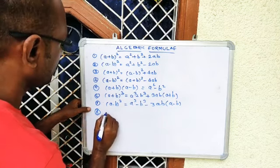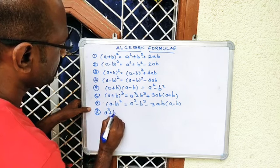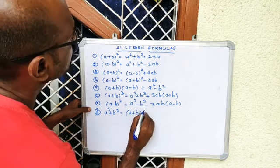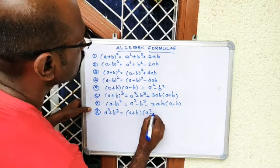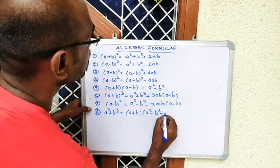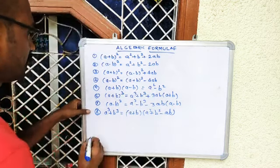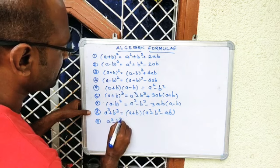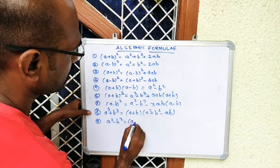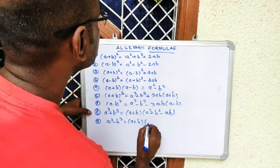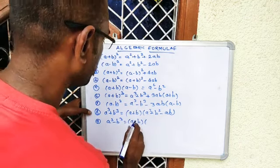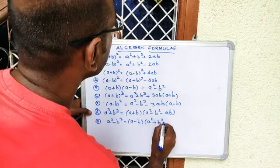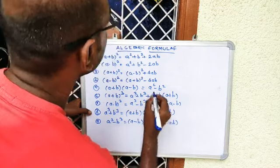Number eight: a³ + b³ = (a + b)(a² + b² - ab). Number nine: a³ - b³ = (a - b)(a² + b² + ab).